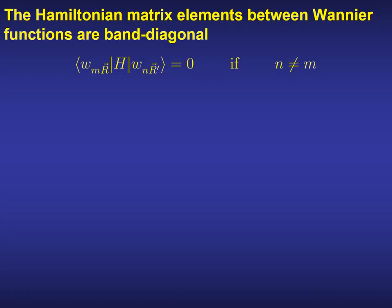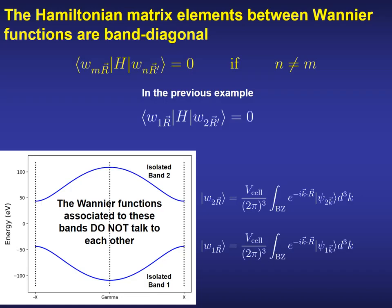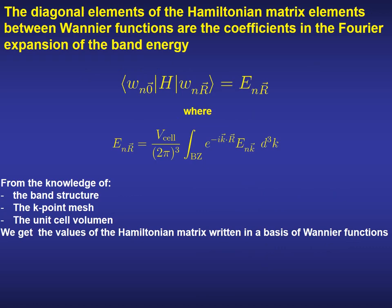The last two properties are related with the expression of the Hamiltonian in a basis of Wannier functions. The first one tells us that the Hamiltonian matrix elements expressed in a basis of Wannier functions are band diagonal. In other words, the Wannier functions associated with different bands do not couple to each other via the Hamiltonian. The diagonal elements of the Hamiltonian are the coefficients in the Fourier expansion of the band energy, as shown in the first slide of this presentation. So from the knowledge of the band structure, the k-point mesh, and the unit cell volume, we can get the values of the Hamiltonian matrix elements written in a basis of Wannier functions.